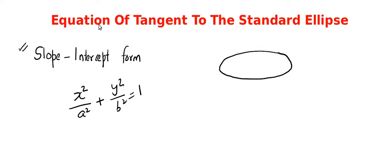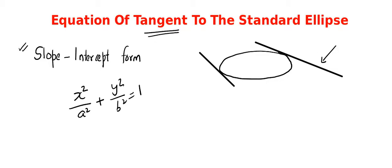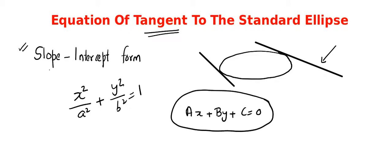Tangent means it is a line. The tangent is a line which touches the curve at one point. Since we want to derive the equation of a tangent, it is obvious that we want the equation of a line. We can express the equation of a line in many forms, but basically the form will be Ax + By + C = 0. However, my aim is to express it in the form y = mx + c, where m represents the slope and c will be the y-intercept.